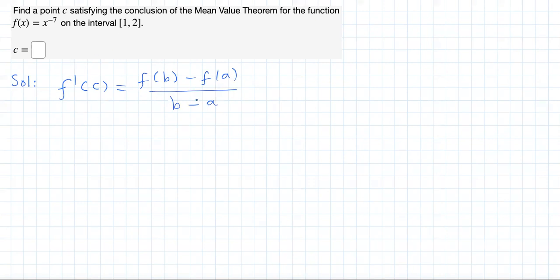the derivative should be equal to the average value of the function. This is going to be over a, this is going to be over b. So we have to find a C between 1 and 2 satisfying this condition.